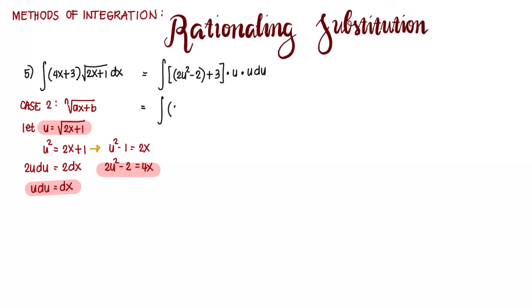This is now (2u² + 1)u² du. Take note, this is -2 + 3, which results in +1. So we distribute u², and we have 2u⁴ + u² du, which is already integrable.